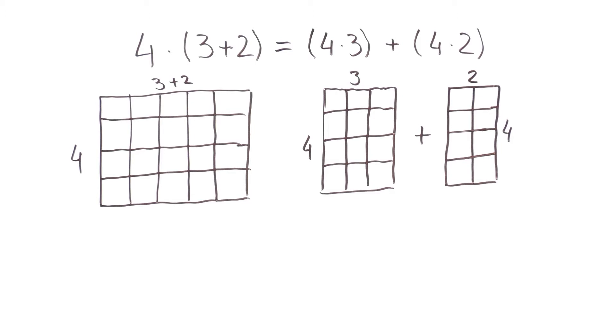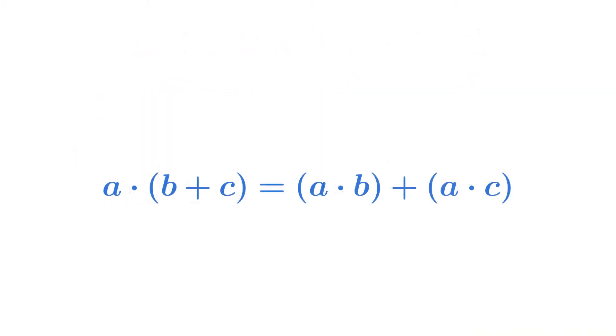Similarly, we can also do this for other numbers and not just for 4, 3 and 2. Which means that a times b plus c is equal to a times b plus a times c for all natural numbers a, b and c.